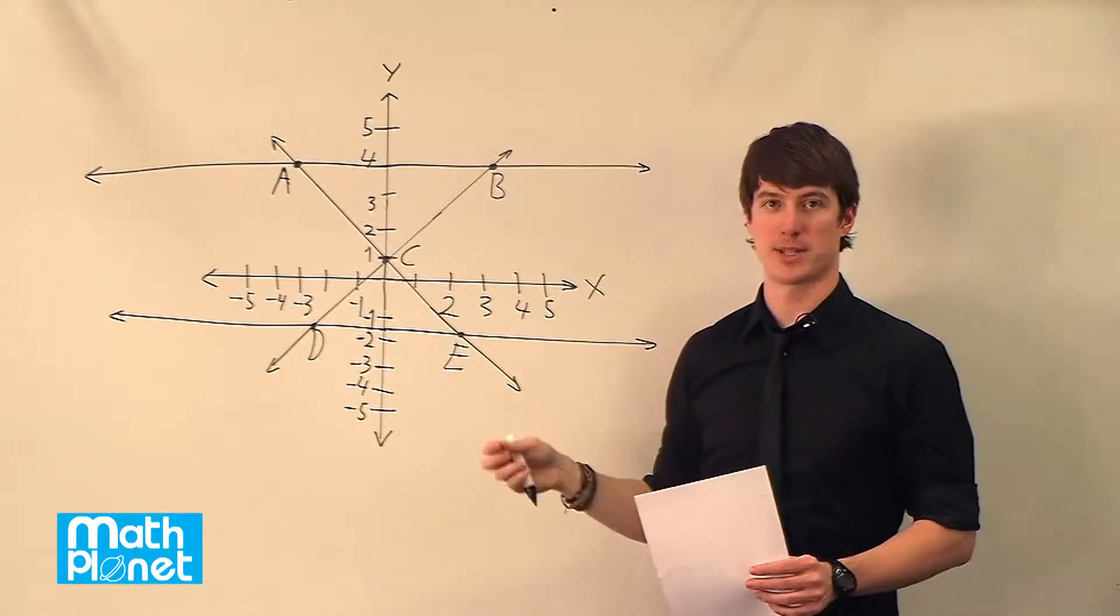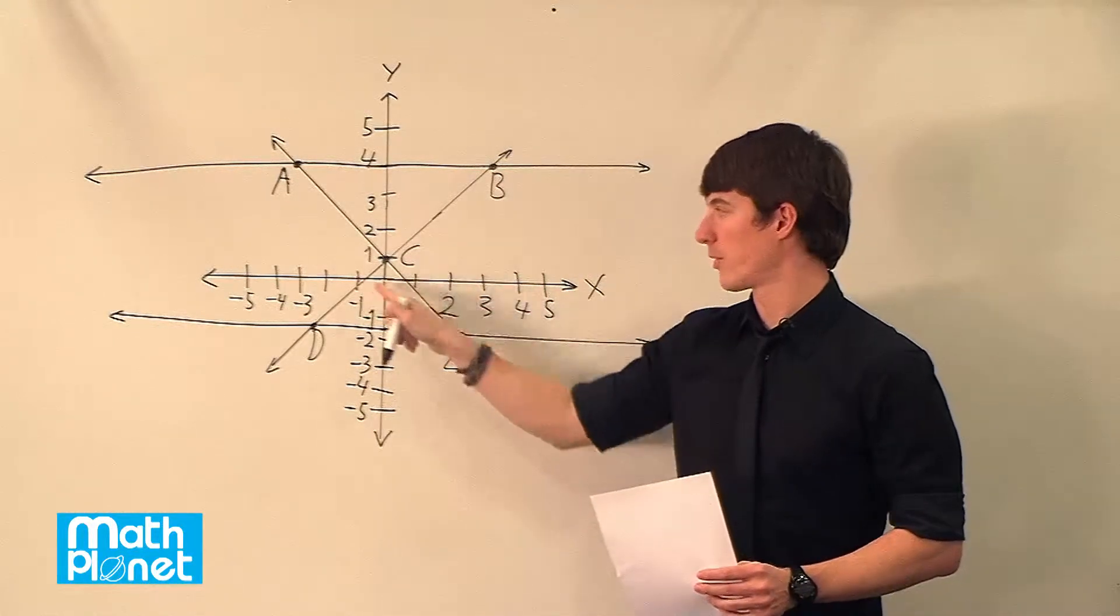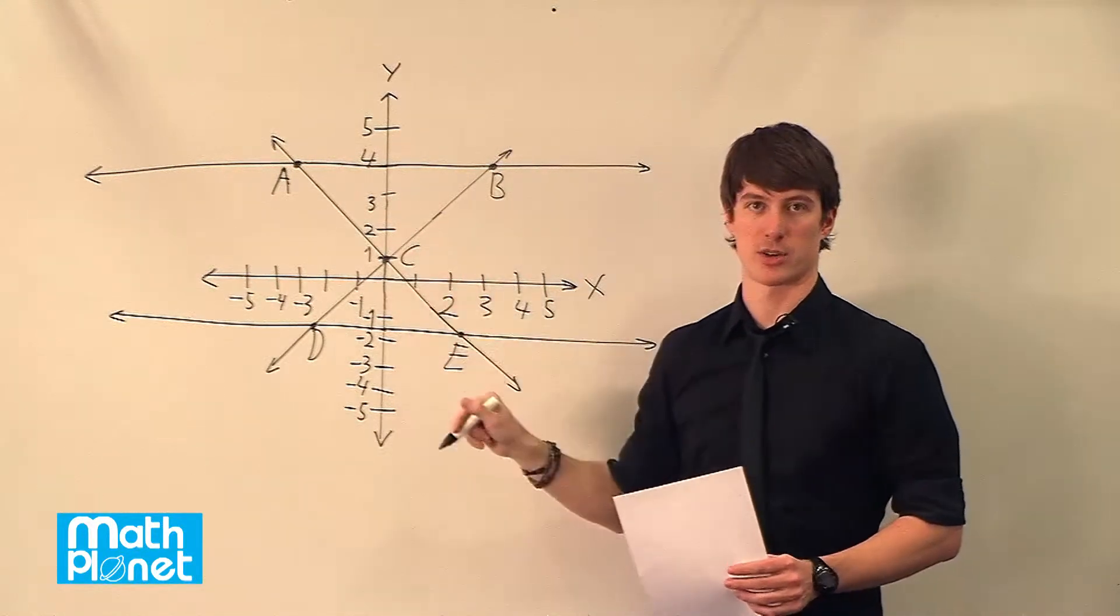We could also talk about something that's perpendicular. So things that are perfectly perpendicular, when they intersect, each of the angles is 90 degrees.